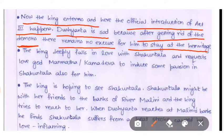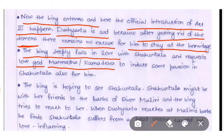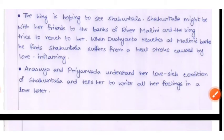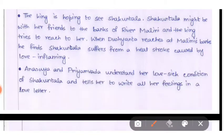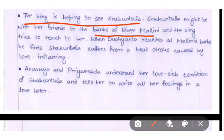The king deeply falls in love with Shakuntala and requests the love god Manmatha to induce the same passion in Shakuntala for him. King Dushwanta is hoping to see Shakuntala, thinking she might be with her friends at the banks of the river Malini, and the king tries to reach her.